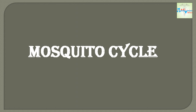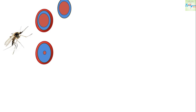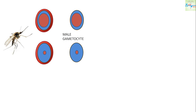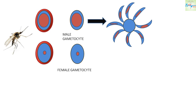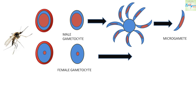Now let's see the mosquito cycle. The mosquito which had its blood meal contains RBCs with male and female gametocytes. These gametocytes are released into the midgut of the mosquito. The nuclear material and cytoplasm of the male gametocyte divides to produce 8 microgametes with long, actively motile, whip-like filaments — the exflagellating male gametocyte — which develops into the microgamete. The female gametocyte does not divide but undergoes maturation to form the macrogamete.